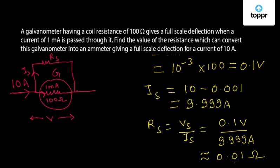So this is the value of the shunt resistance which can convert this galvanometer into an ammeter giving a full scale deflection for a current of 10 ampere.